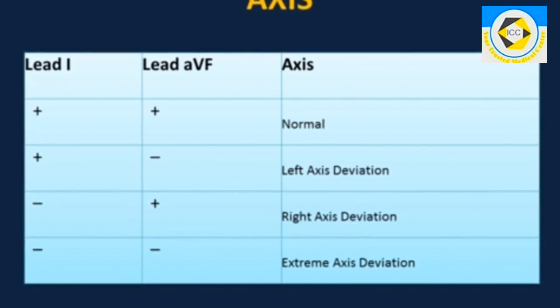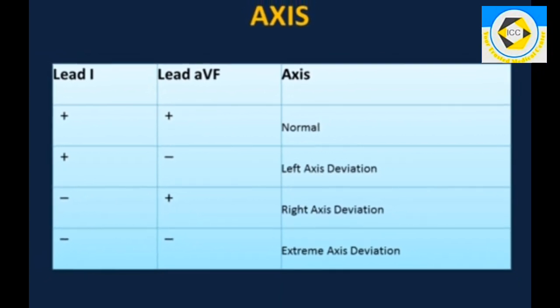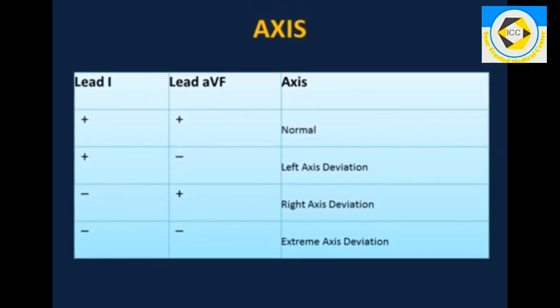If QRS complex is negative in lead 1 and positive in AVF, then right axis deviation. And if it is negative in both leads, then extreme axis deviation.